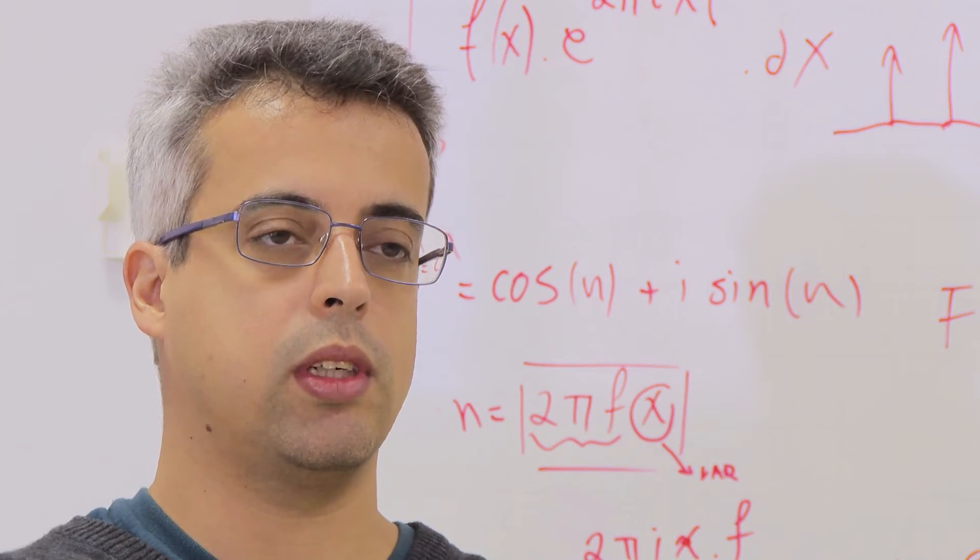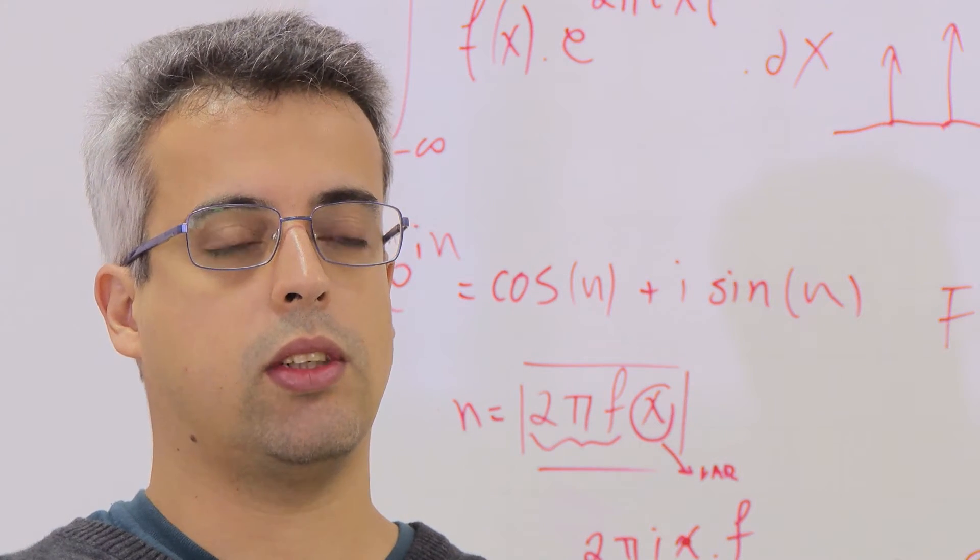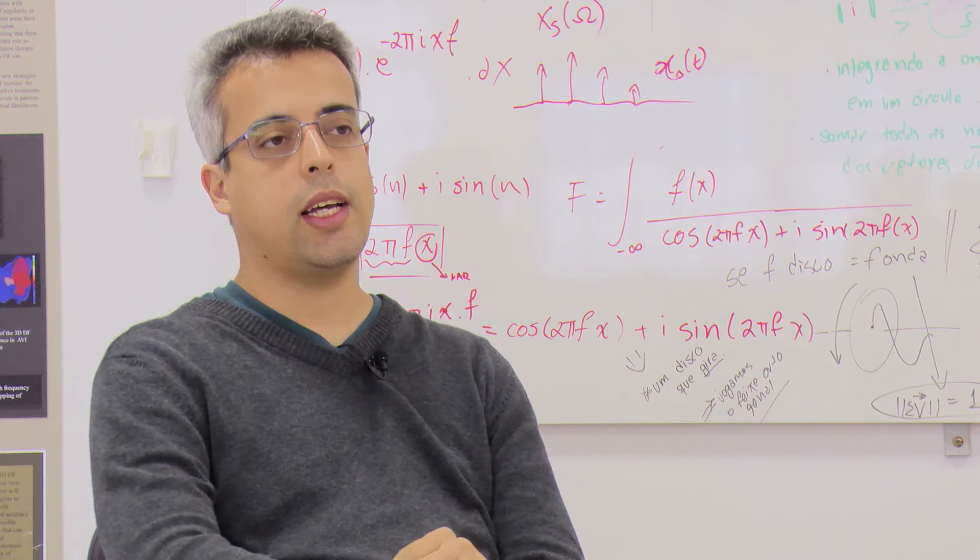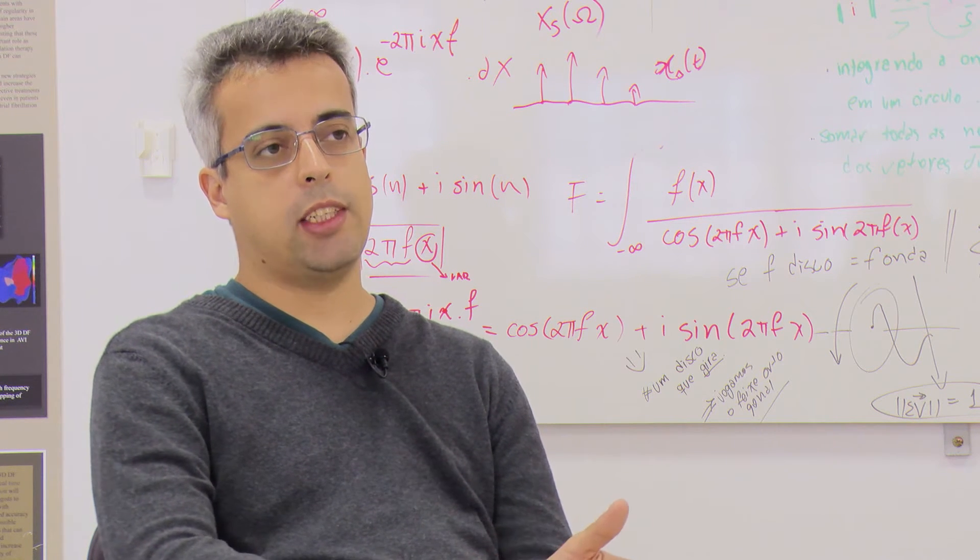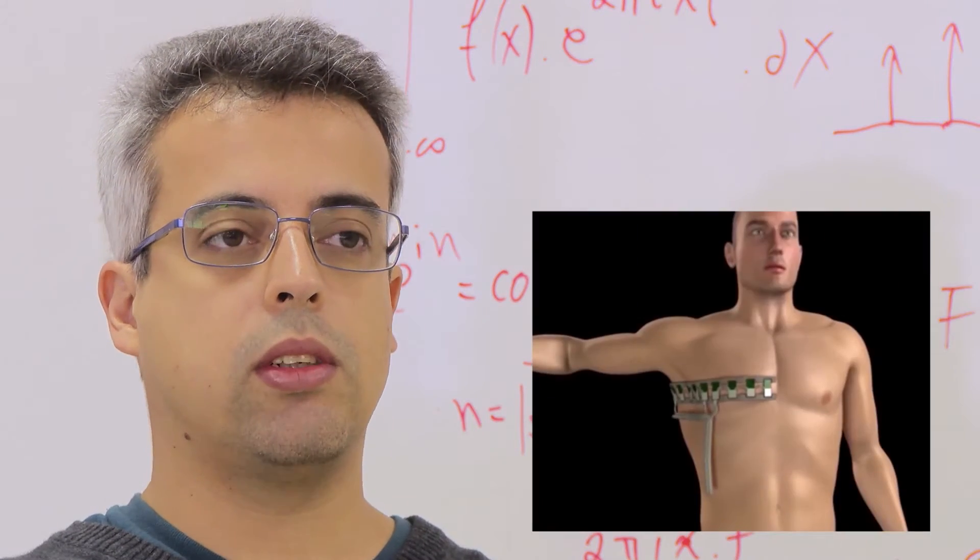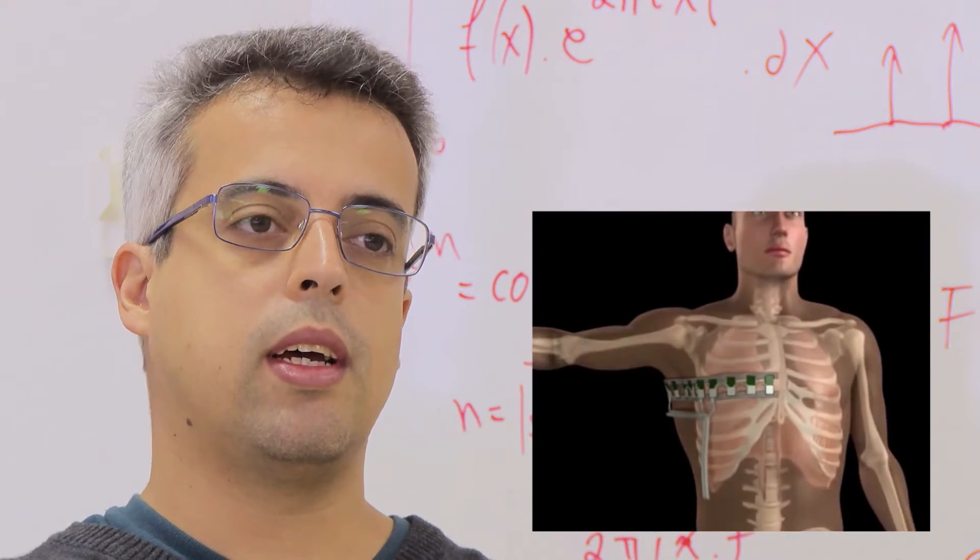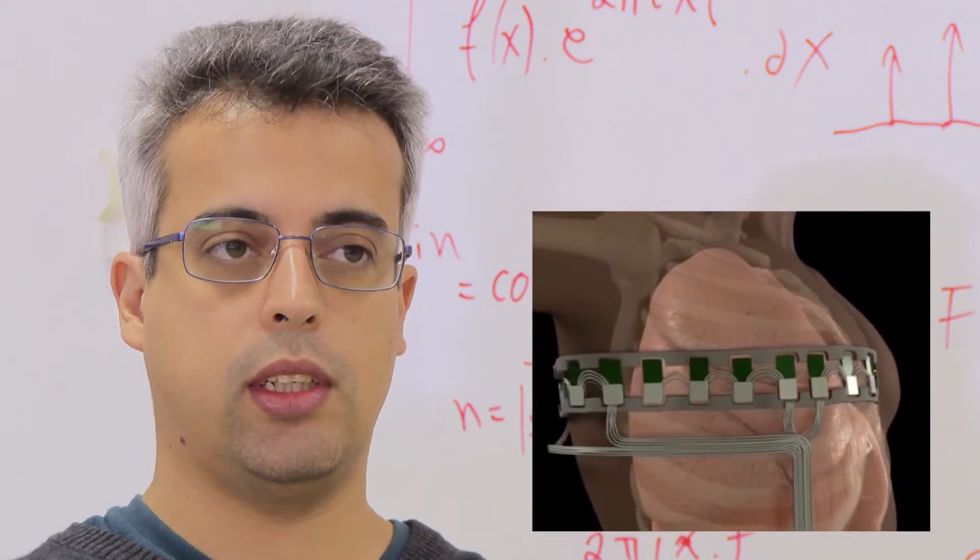Nós injetamos corrente elétrica de alta frequência e baixa amplitude, mas isso está dentro de todos os regulamentos internacionais de segurança elétrica. Essa corrente vai causar uma diferença de potencial no contorno do tórax. Os potenciais elétricos são medidos na superfície do tórax utilizando uma série de eletrodos. No nosso equipamento nós utilizamos 32 eletrodos.